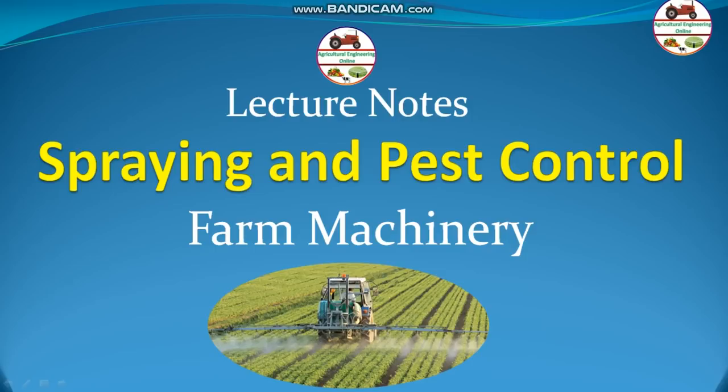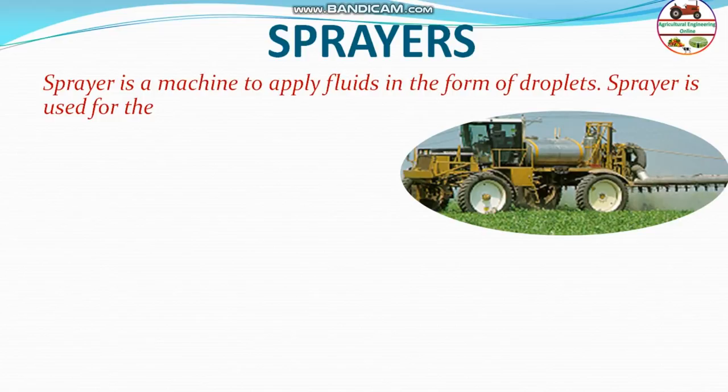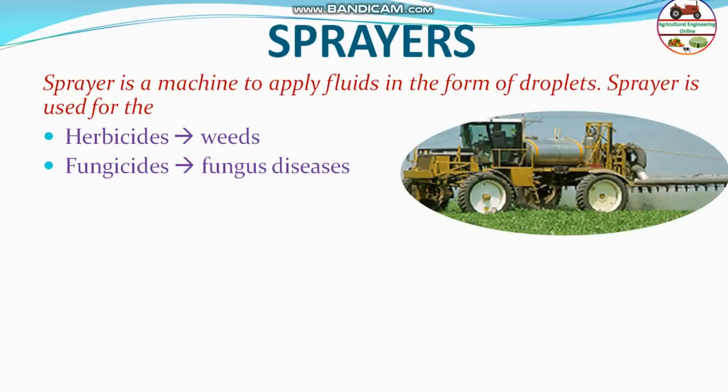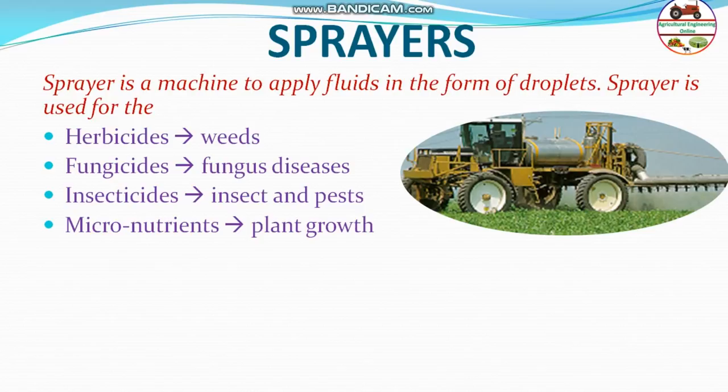First of all, what is a sprayer? A sprayer is a machine to apply fluids in the form of droplets. Generally, a sprayer is used for the application of herbicides to control weeds, fungicides to control fungal disease, insecticides to control insects and pests, and also to apply micronutrients such as fertilizers or hormones for plant growth.